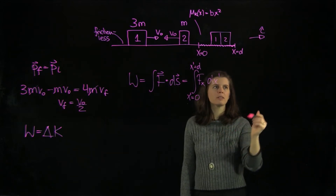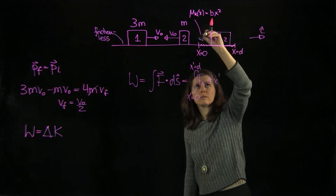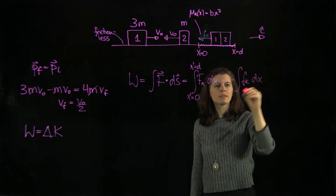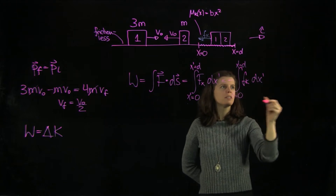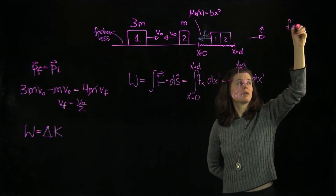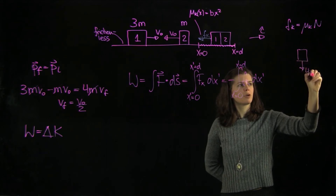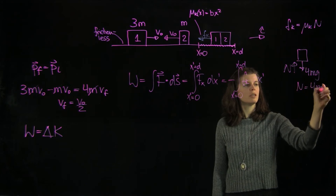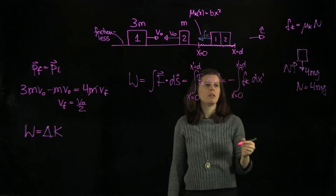The work is the integral of F·ds, which in this one-dimensional problem is the integral of F dx from 0 to d. The force at work here is the frictional force, which opposes the motion. We get a minus sign: minus the integral of fk dx from x' equals 0 to x' equals d. We know fk equals μk·N. From a quick free body diagram, 4mg acts downward and the normal force acts upward, so N equals 4mg. The coefficient of kinetic friction is given as bx².